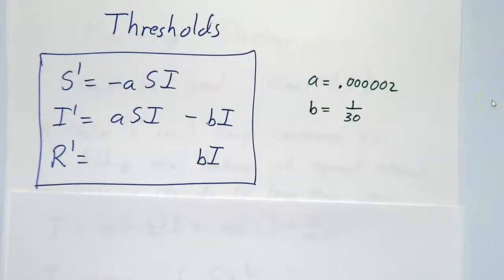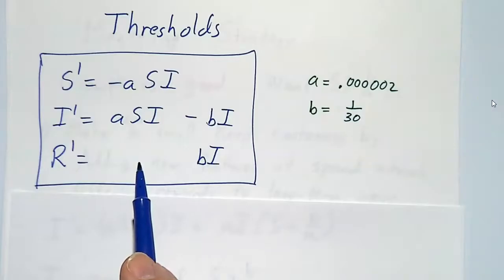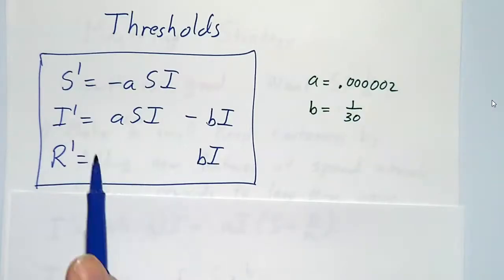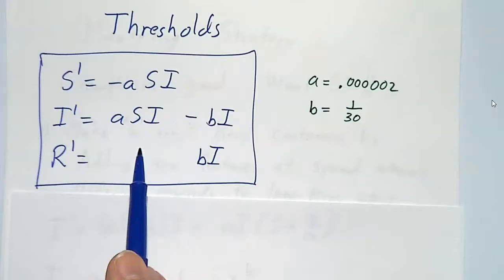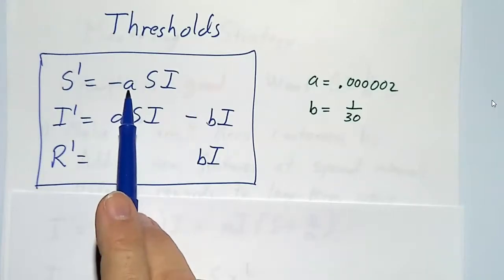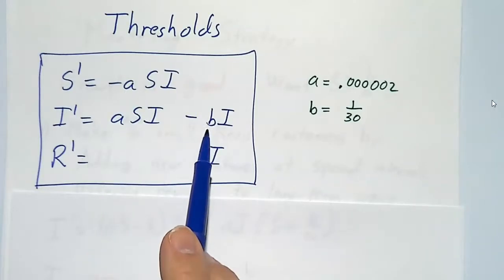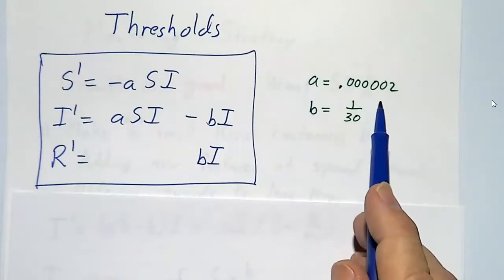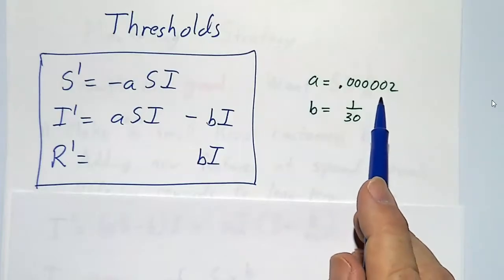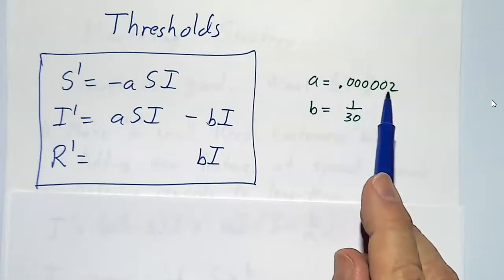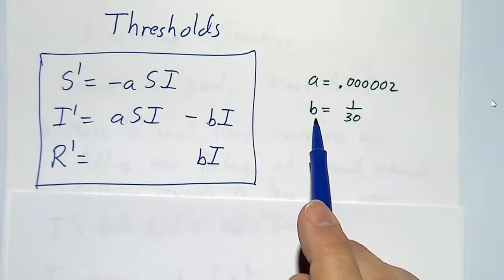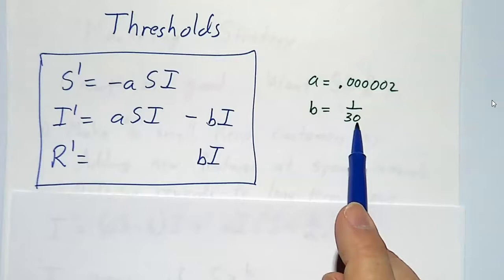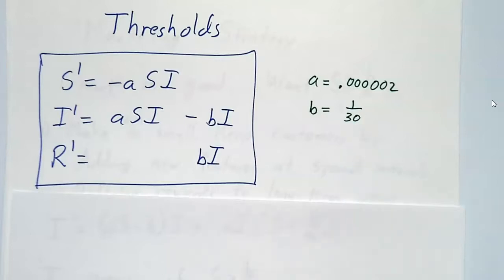In the last video, we talked about how to solve the SIR equations numerically. Now we're going to take a different approach. Let's suppose we have a system governed by the SIR equations, where we have a transmission coefficient a and a recovery coefficient b. In particular, we talked about a model where transmission happened with a equals 0.0000002, and attrition happened with b equals 1/30. Our product was used on average for a month before people discarded it.